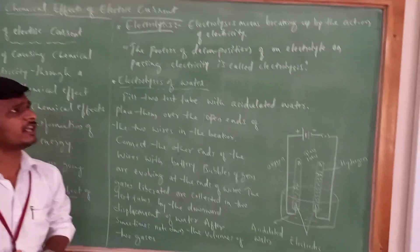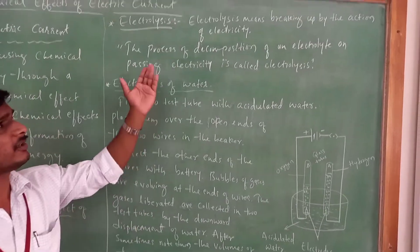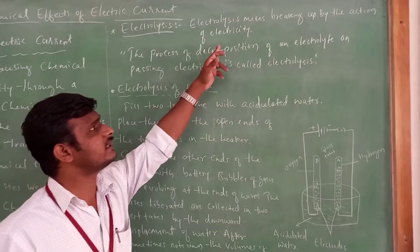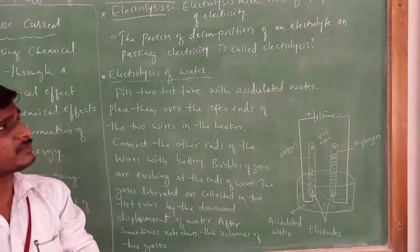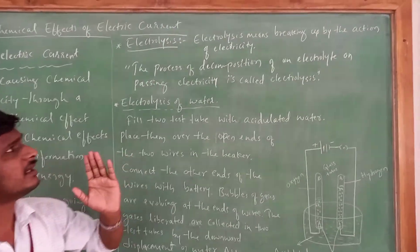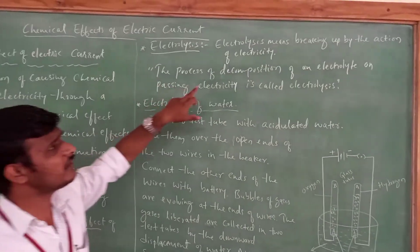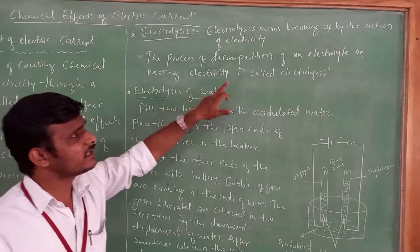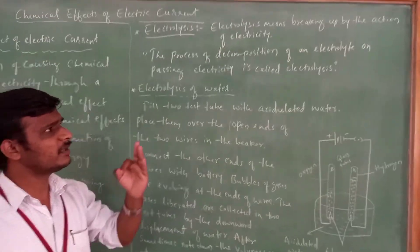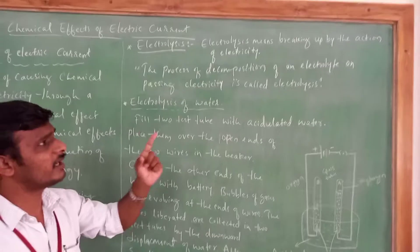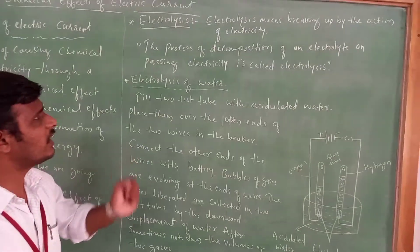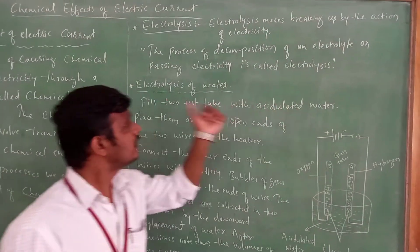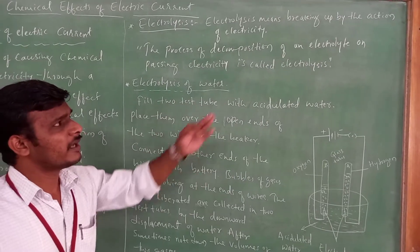So what do we mean by electrolysis? Electrolysis means breaking — the substance is broken by the action of electricity. The process of decomposition of an electrolyte on passing electricity is called electrolysis. In other words, it means the splitting of an electrolyte on passing electricity.